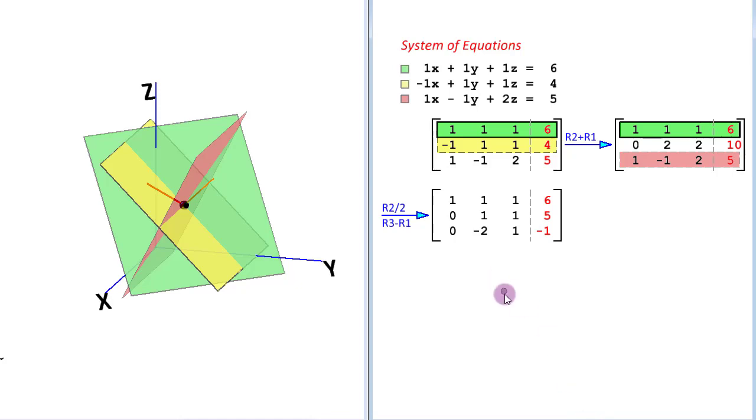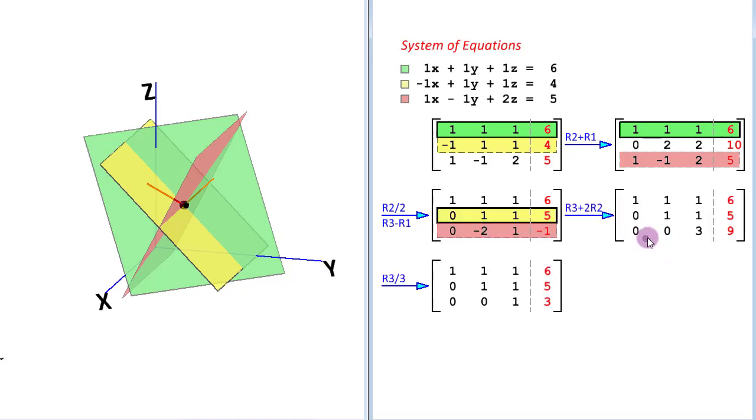With the next row operation, we will try to get a 0 here and can do that by taking twice the second row and adding it to the third row. Here is the row operation and the resulting matrix. We got this 3 and 9, so we divided row 3 by 3 to get 1 and 3 here. Graphically speaking, that will keep the yellow plane intact, while the red plane will be rotating about their common line of intersection.